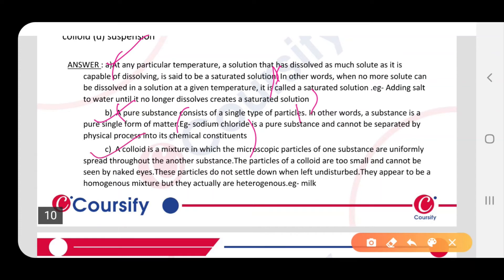Number C, colloid. A colloid is a mixture in which the microscopic particles of one substance are uniformly spread throughout the another substance. Yarni ki, colloid eek aisa mixture hai, jis meh joh microscopic particles hai, yani ki, bhoat chhoate chhoate particles. Eek substance ke particles, dusre substance mein spread out rheate hain.